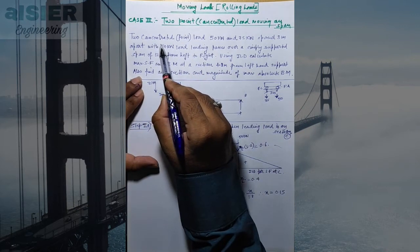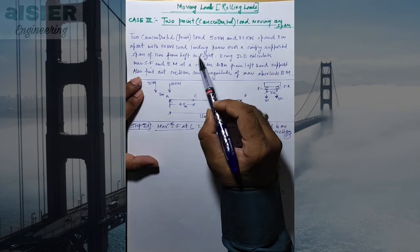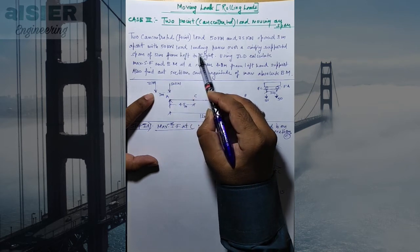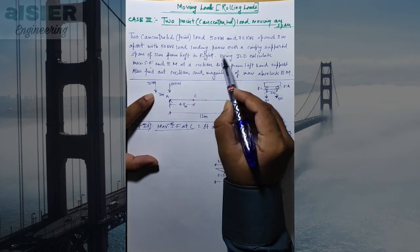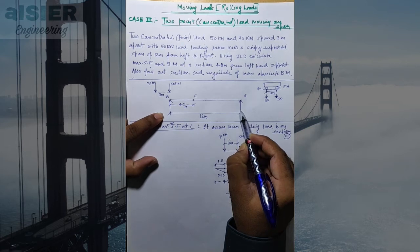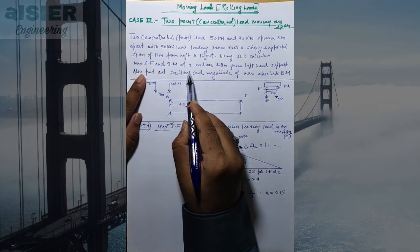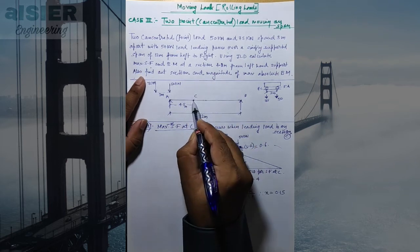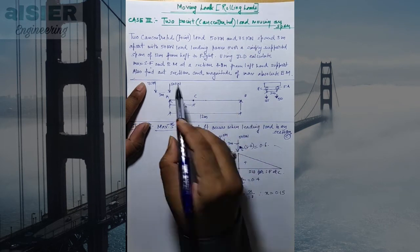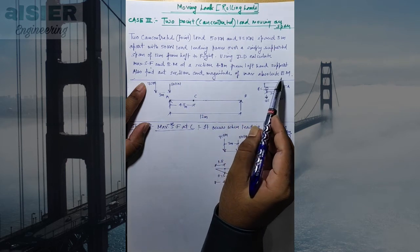Two concentrated loads of 50 kN and 75 kN are spaced 3 meters apart, with the 50 kN load leading. They pass over a simply supported span of 12 meters. Using the ILD, calculate the maximum shear force and maximum bending moment at section 4.8 m. Also find the position and magnitude of the absolute maximum bending moment.